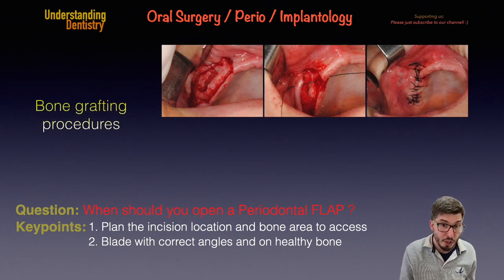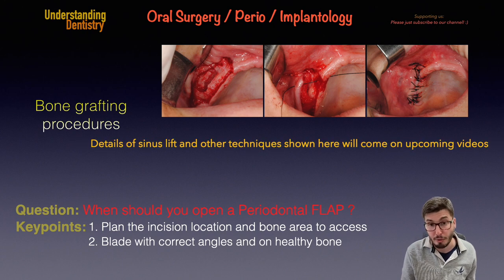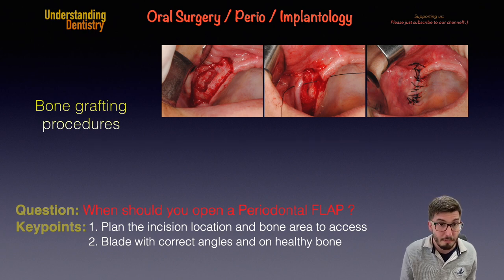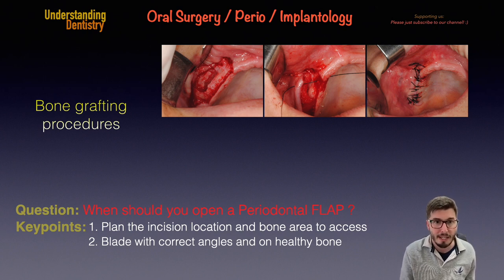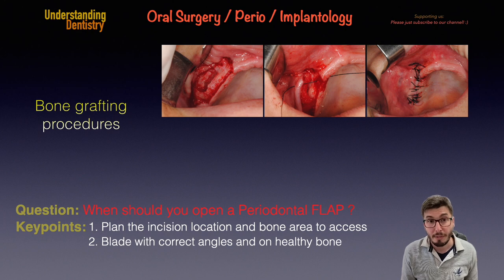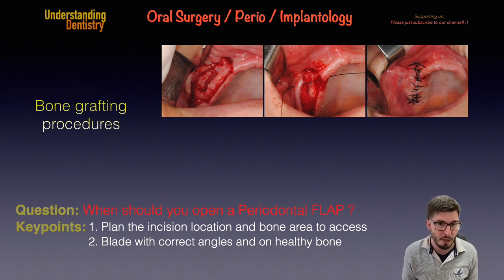Now we have a bone grafting procedure — the sinus floor augmentation or sinus lift procedure — on the screen. The flap here is still the Neumann flap, but now the trapezoidal version because we have two releasing incisions: an anterior and a posterior releasing incision, allowing access to a larger area. In the middle picture, you can see that suturing begins at the angle of the releasing incision, which is a very helpful technique for suturing this type of flap.